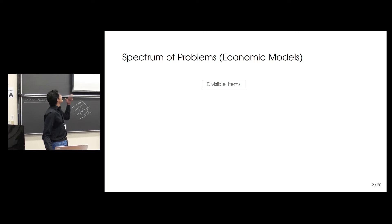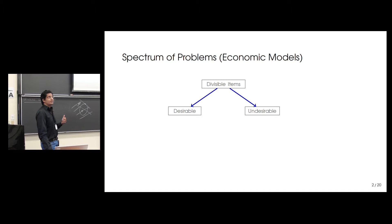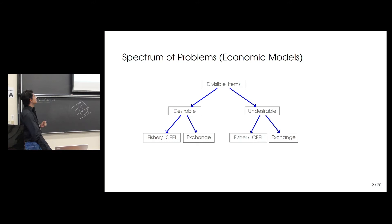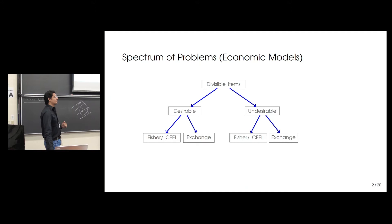We are in the setting with divisible items. These divisible items can be ones that give us utility or ones that give us dis-utility. The ones giving utility we call goods, and the ones giving dis-utility we call chores. Depending upon the economic model under which we consider allocation, you have a broad spectrum of problems. I'll be considering two fundamental economic models: the Fisher model and the exchange model, the latter being a generalization of the former.